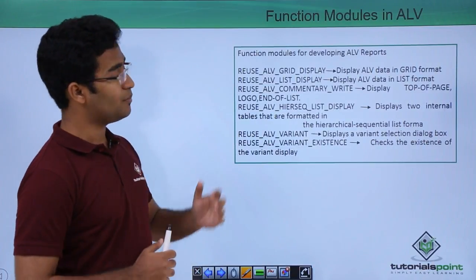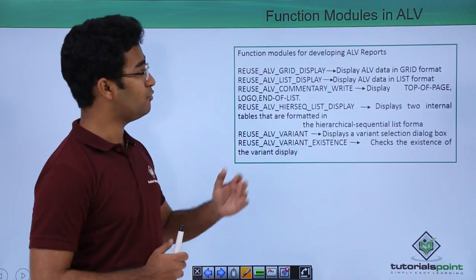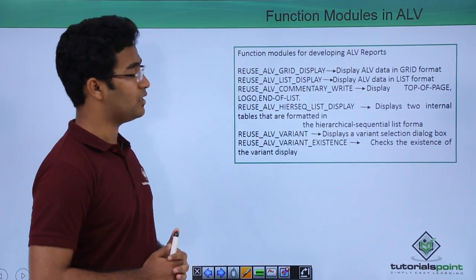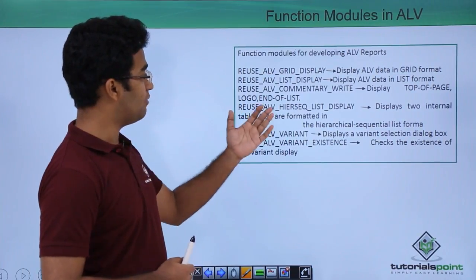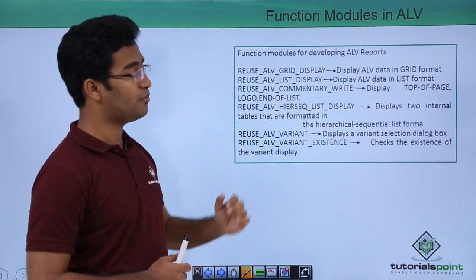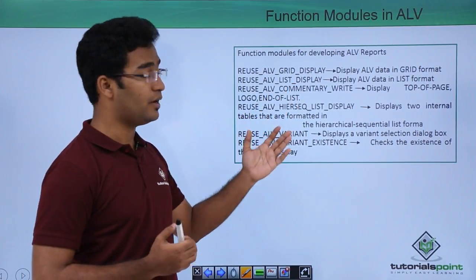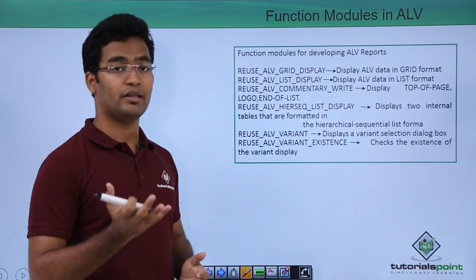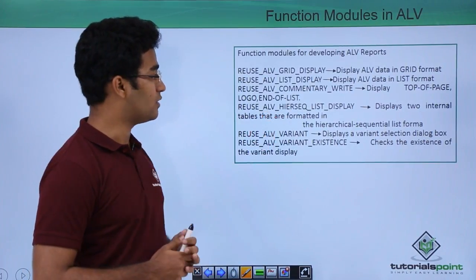These are some of the function modules used in ALV, like REUSE_ALV_GRID_DISPLAY and REUSE_ALV_LIST_DISPLAY. Grid display is used to get the output in the form of a grid, and list display is used to get the output in the form of a list.